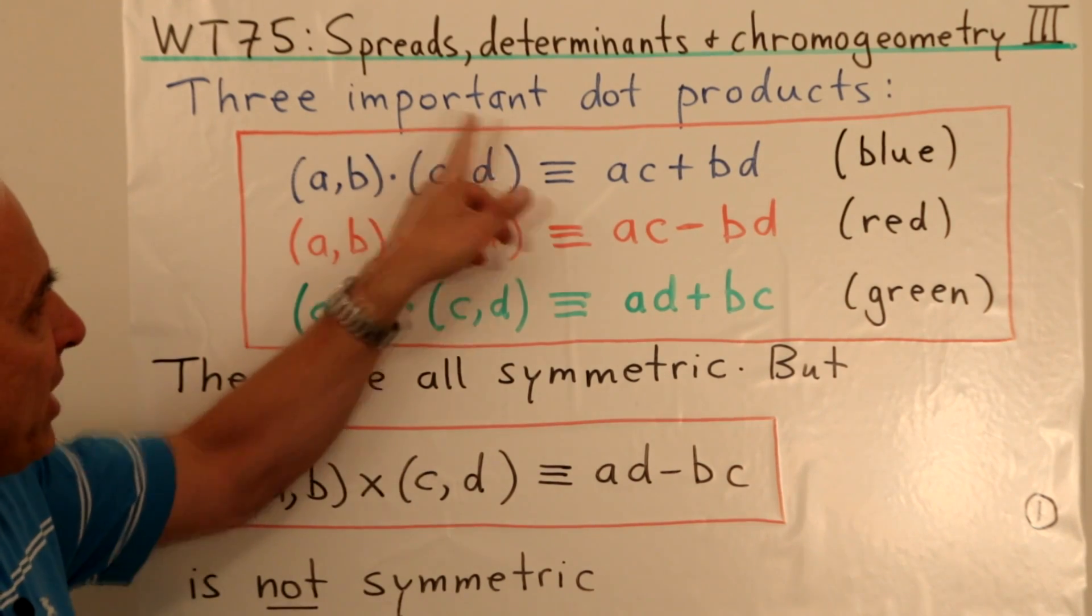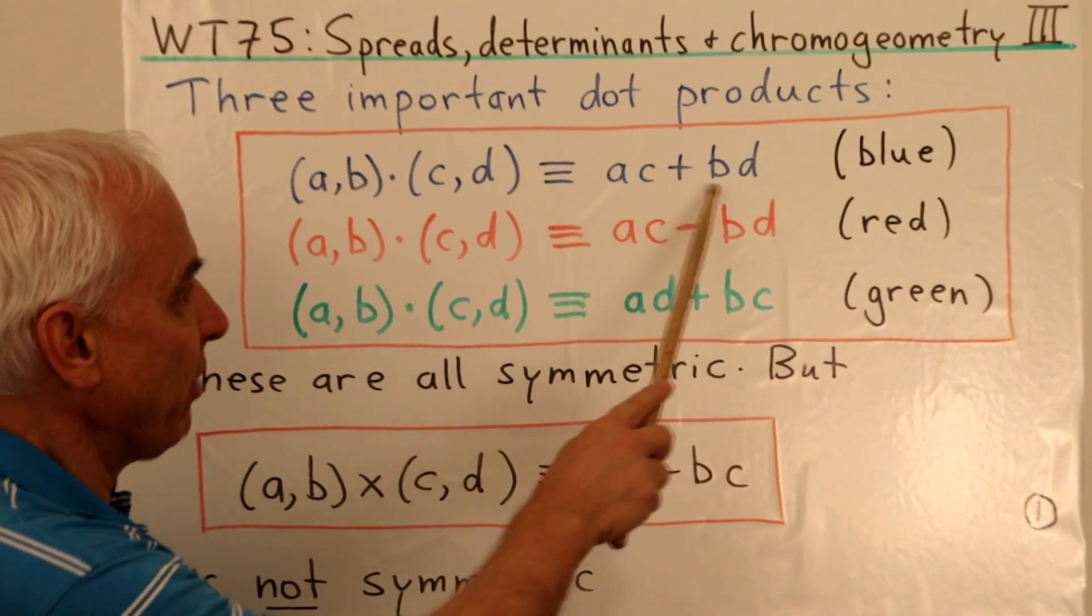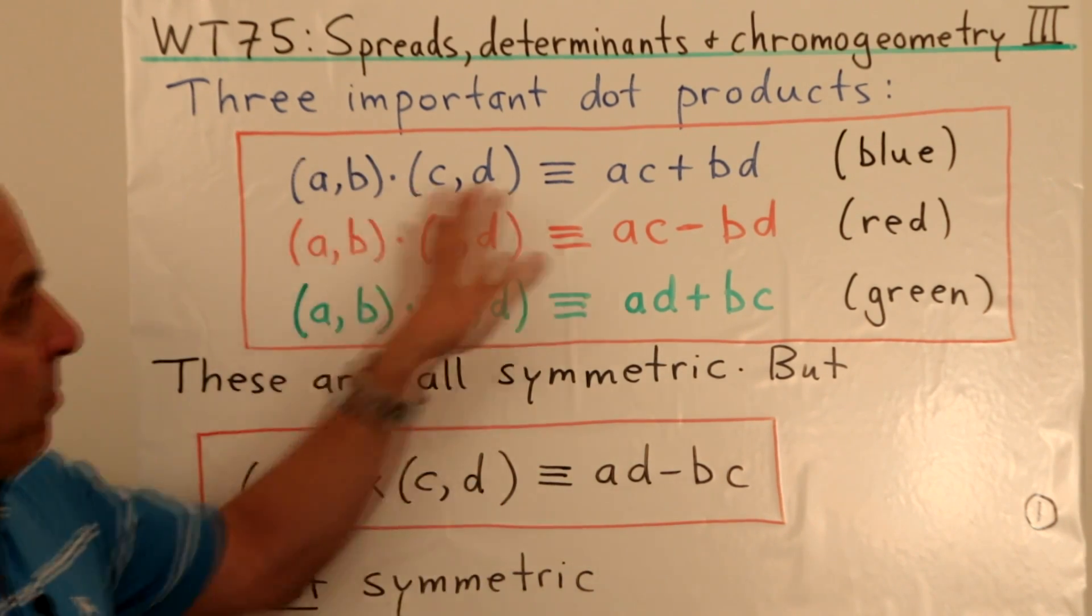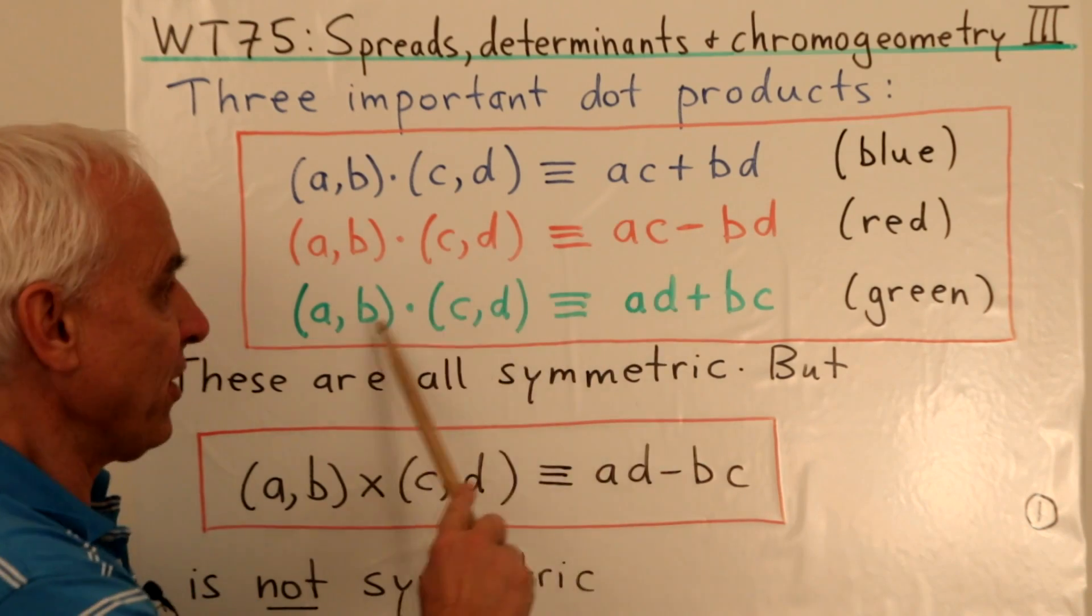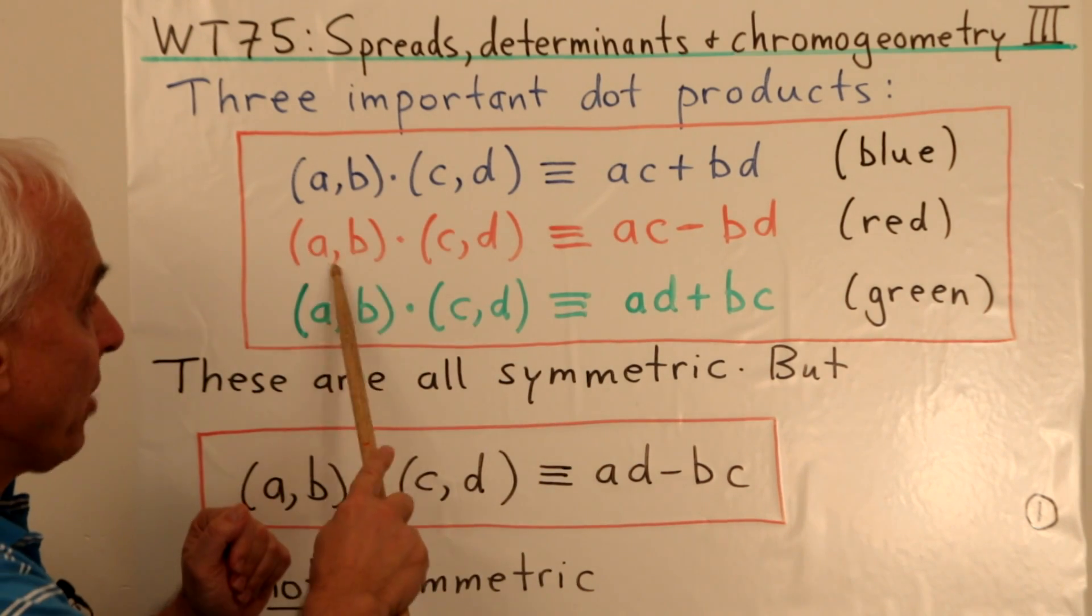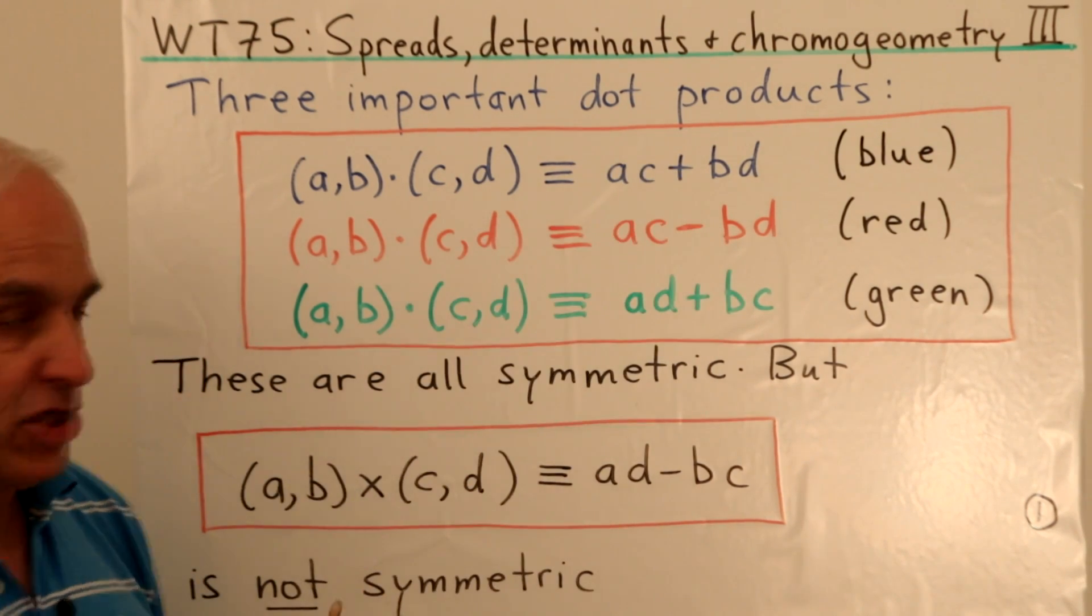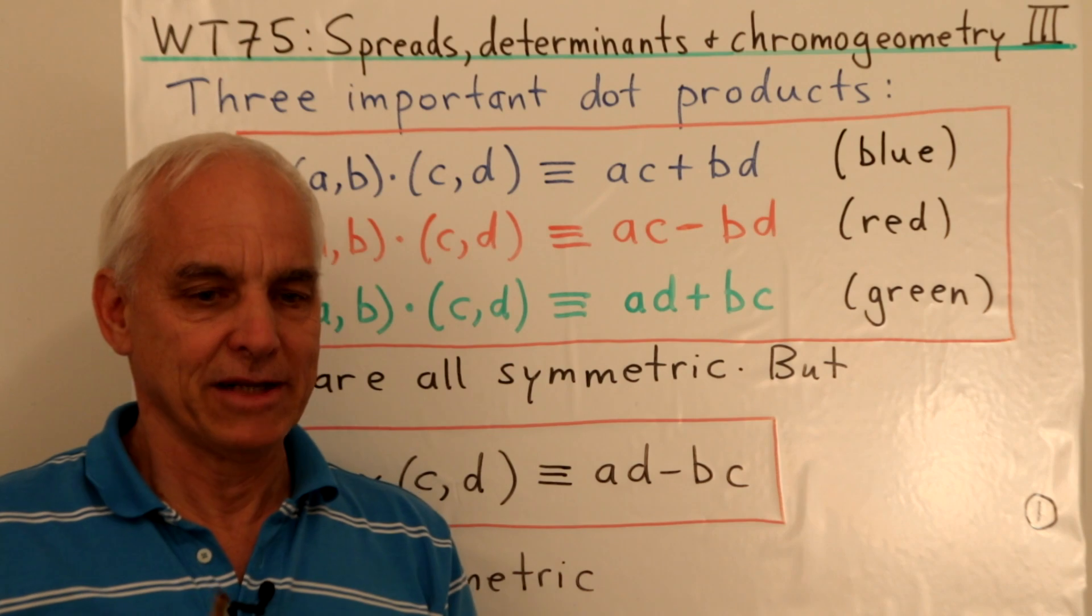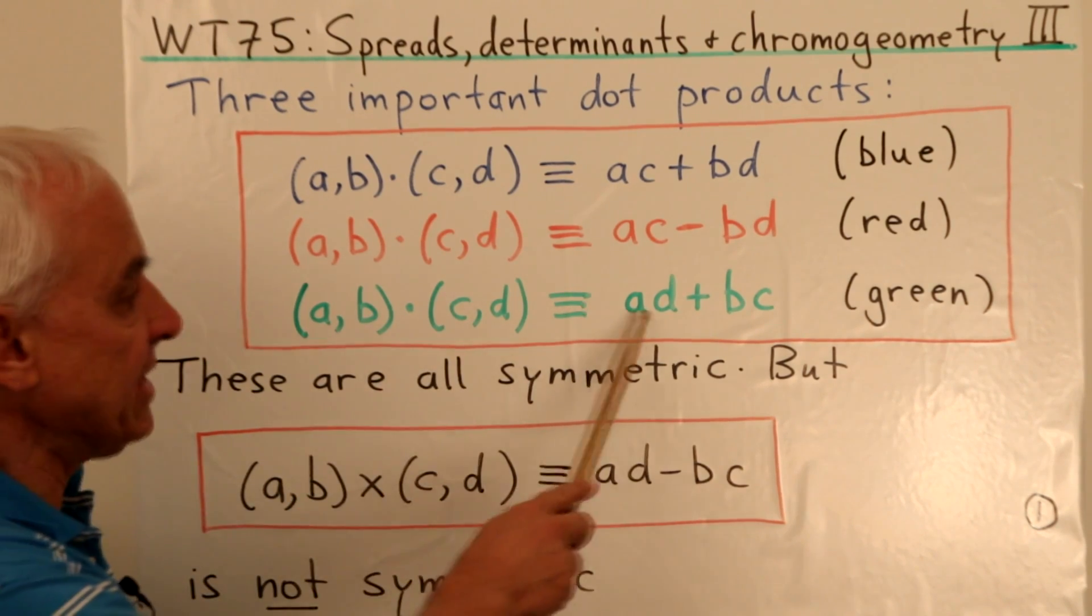We're starting with three important dot products. We're taking the familiar (a,b)·(c,d) = ac + bd dot product, often called an inner product, and we're going to call that the blue dot product and distinguish it from the red dot product and the green dot product. The red dot product is a relativistic analog: (a,b)·(c,d) = ac - bd, so only the plus sign changes to a minus sign. The green one is another relativistic dot product: (a,b)·(c,d) = ad + bc.